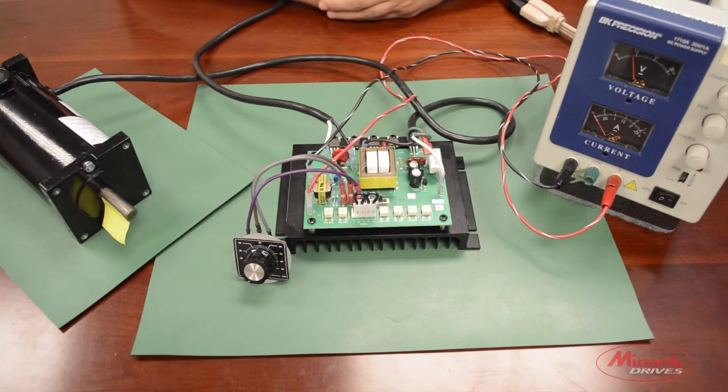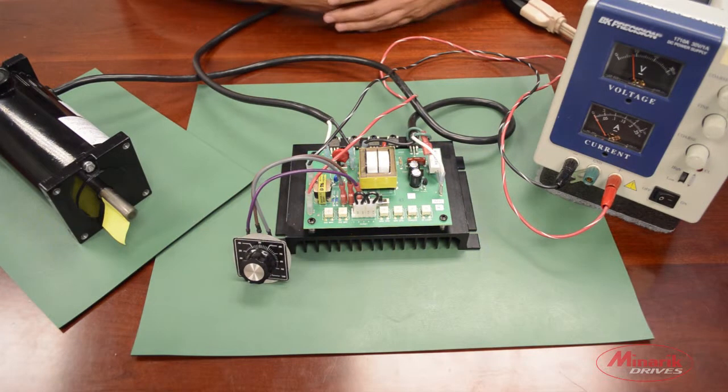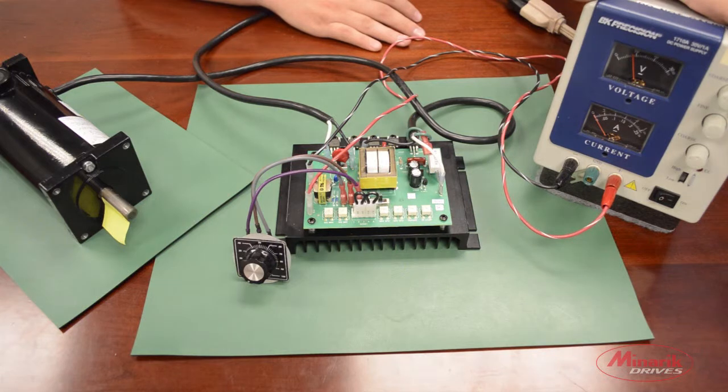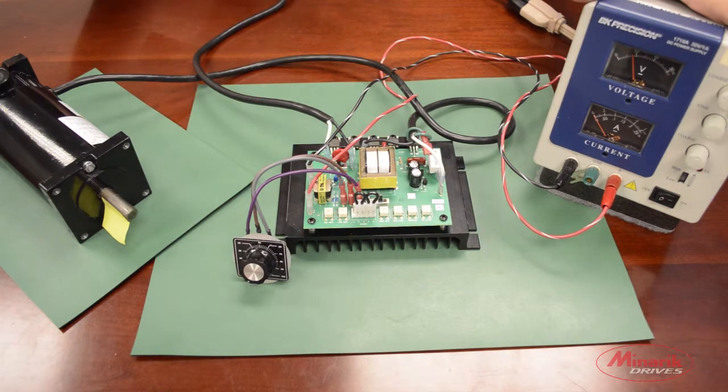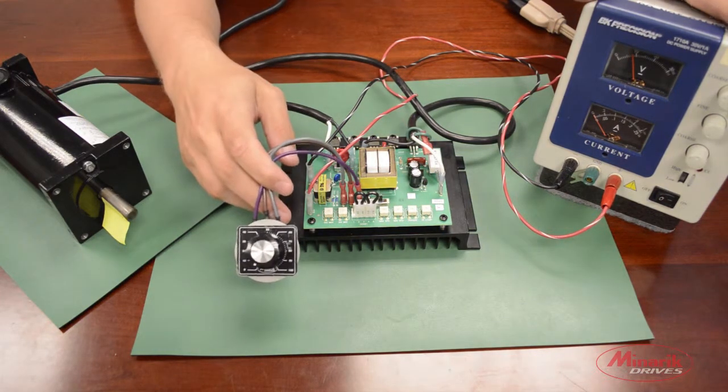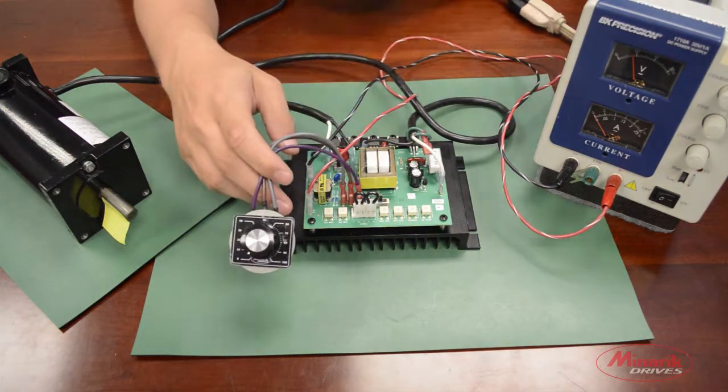Signal with ratio output mode is useful when you are using multiple drives and want to set the max speed reference for each drive. That way you can use the speed potentiometer to change the ratio on each individual drive.